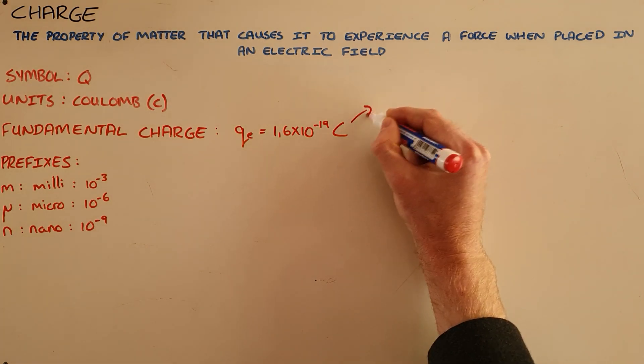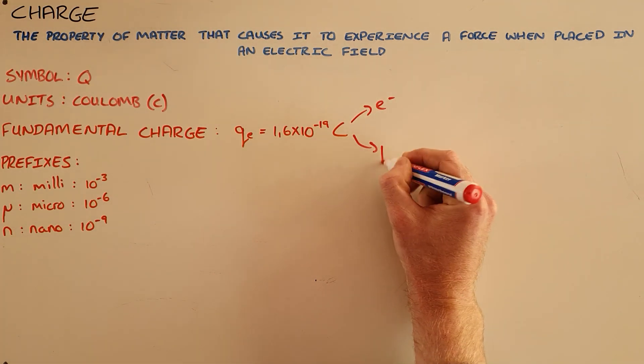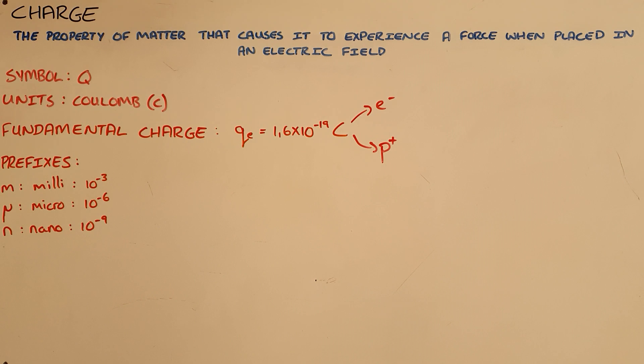This is also the charge that would be found on electrons and protons, so they have the fundamental charge. Obviously, an electron has a negative fundamental charge and a proton has a positive fundamental charge.